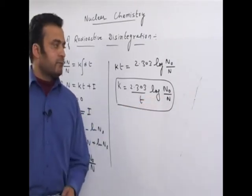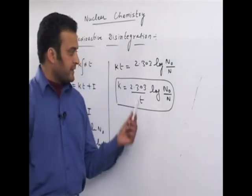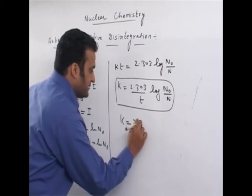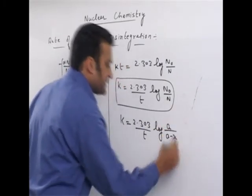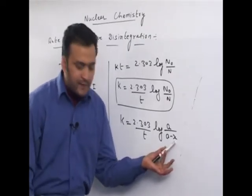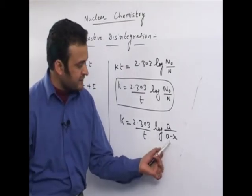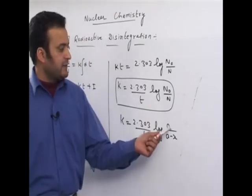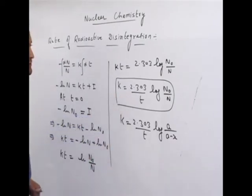N naught is the number of atoms present initially at time equal to 0, N is the number at time T, and K is the decay or disintegration constant. This can also be written as k equals 2.303 upon t times log of a upon (a minus x), where a is the initial number of atoms, x is the number disintegrated up to time T, and a minus x is the number remaining at time T.